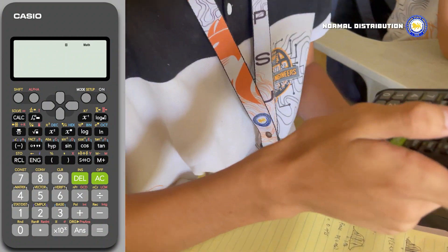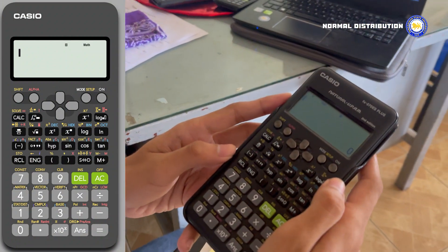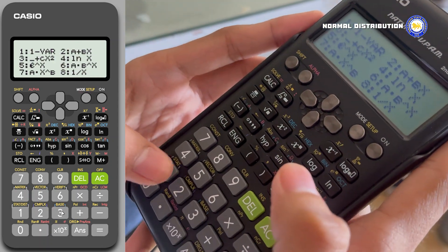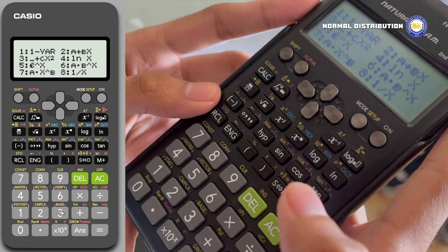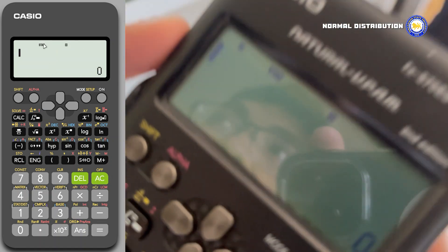Hello world, I'm Janel, your data DJ, here to spin some tunes with normal distribution. Forget the dance floor, we're hitting the data floor. Get ready for a statistical party, Casio style. First, make sure your calculator is in Stat mode. Press Mode and then Stat, which is number 3, and do not pick anything and just press AC to exit. Now you can see your calculator is in Stat mode.